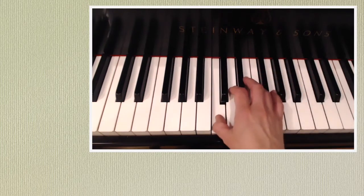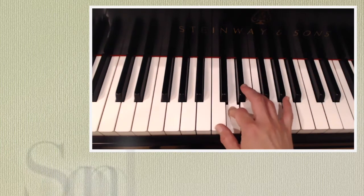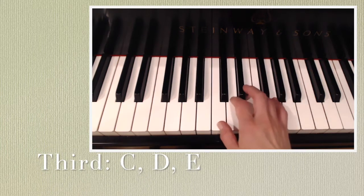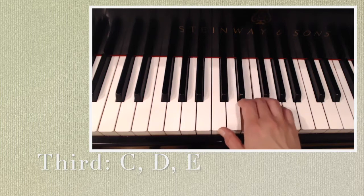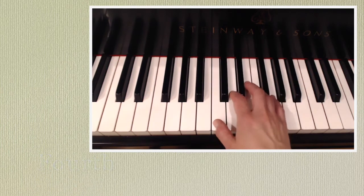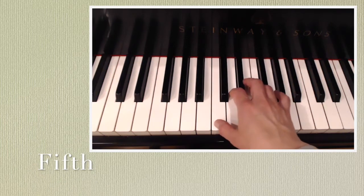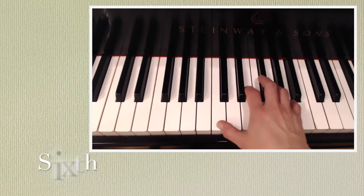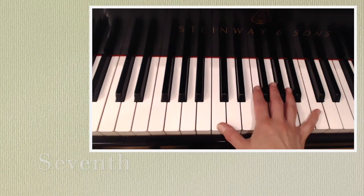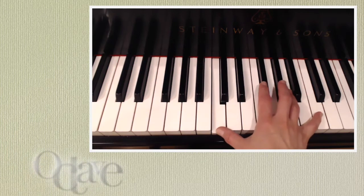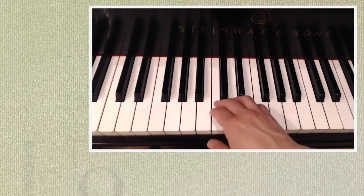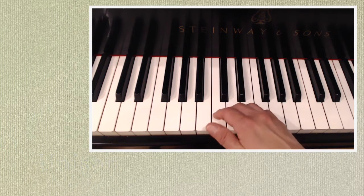For example, C to D is a second. C to E is a third because it fits C, D, and E. C to F is a fourth. C to G is a fifth. C to A is a sixth. C to B is a seventh. And C to the next C is an octave. The repetition of the same note is also an interval that indicates zero change and is called a unison, or the same sound.